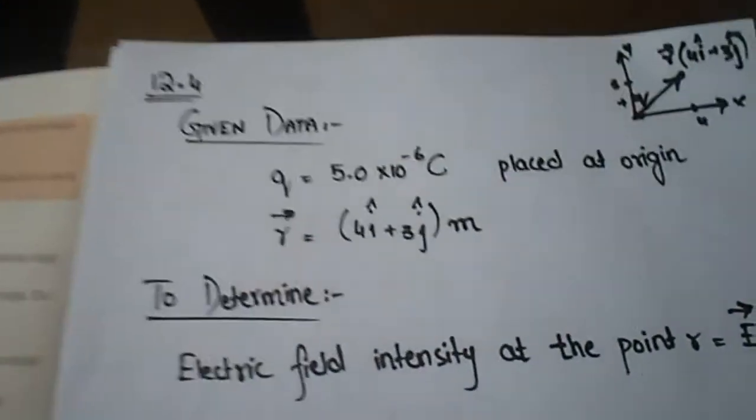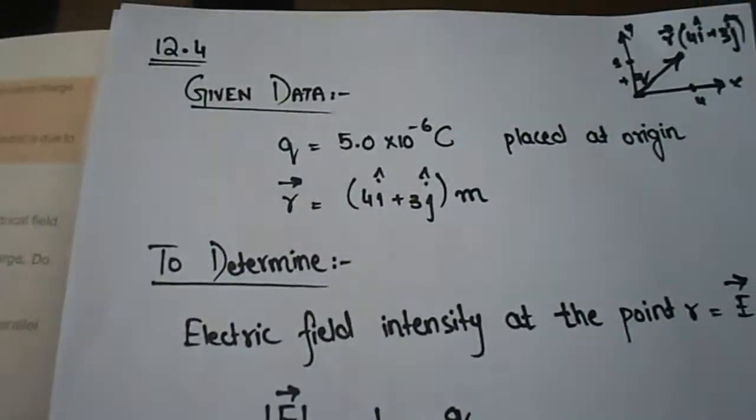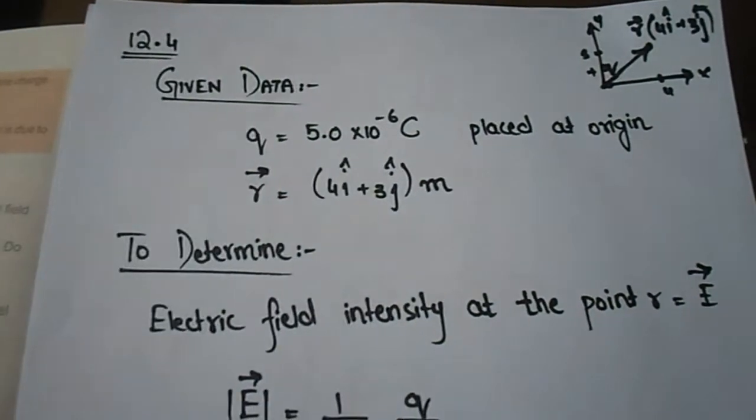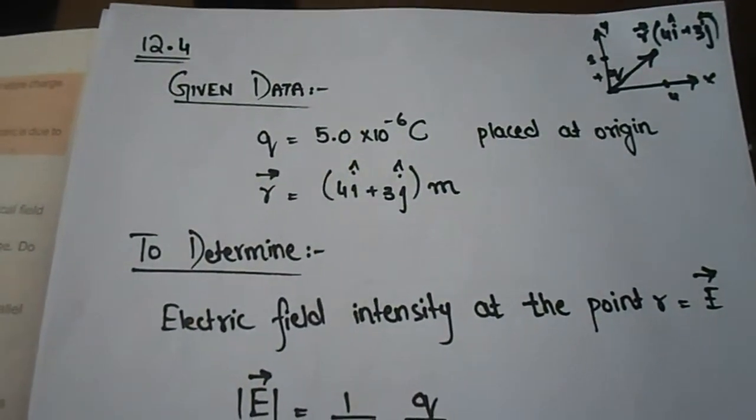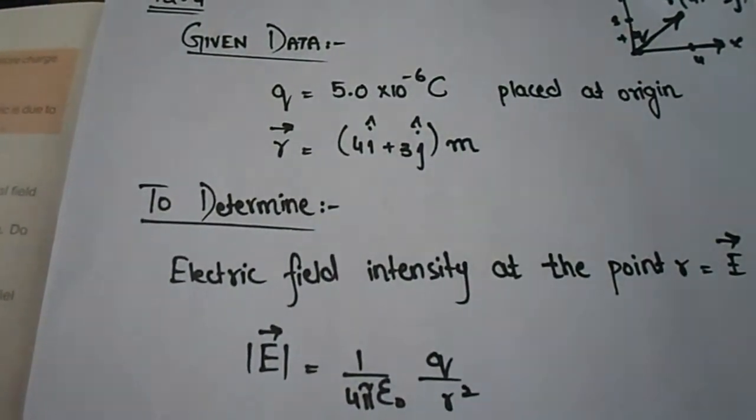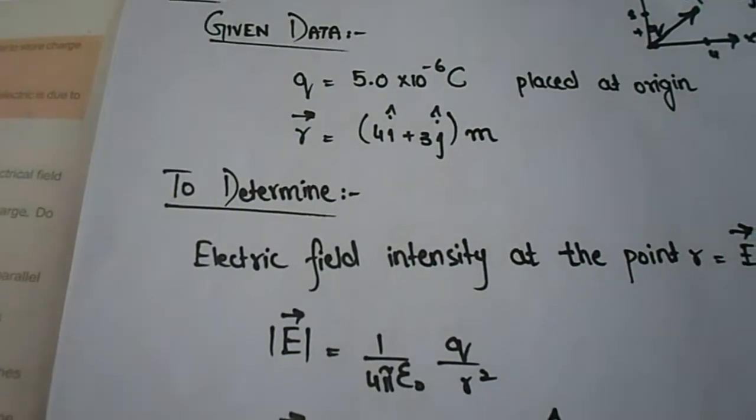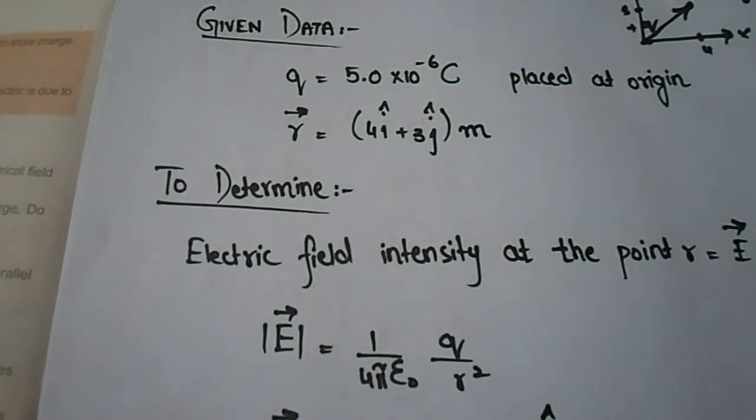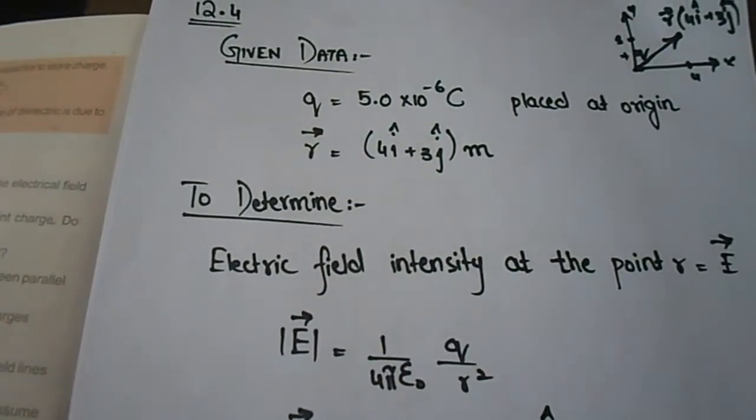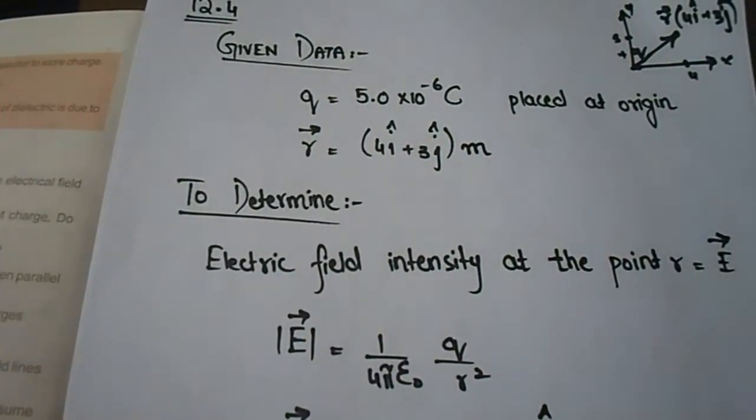We have given that a charge is 5 into 10 to the power minus 6 coulomb which has been placed on the origin, and a position is given vector r equals 4i plus 3j meters where we need to determine the electric field.